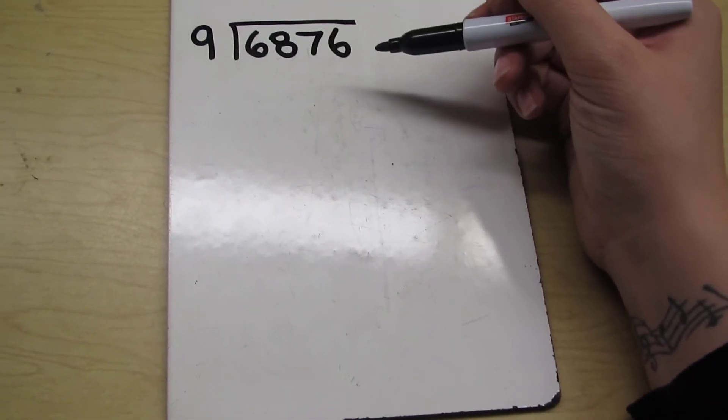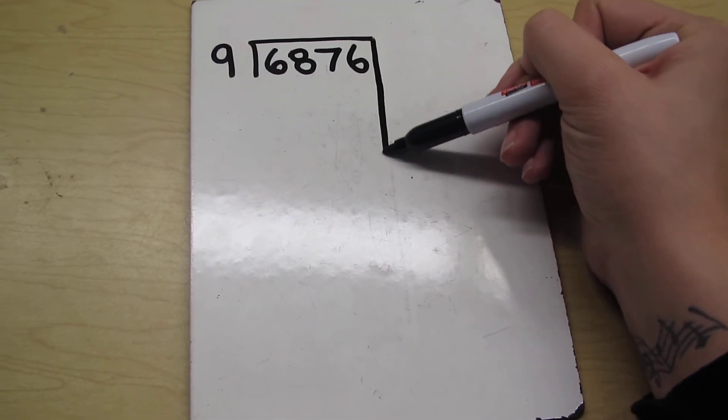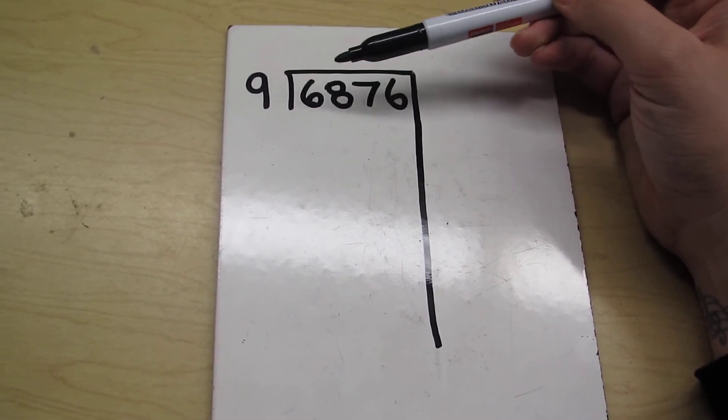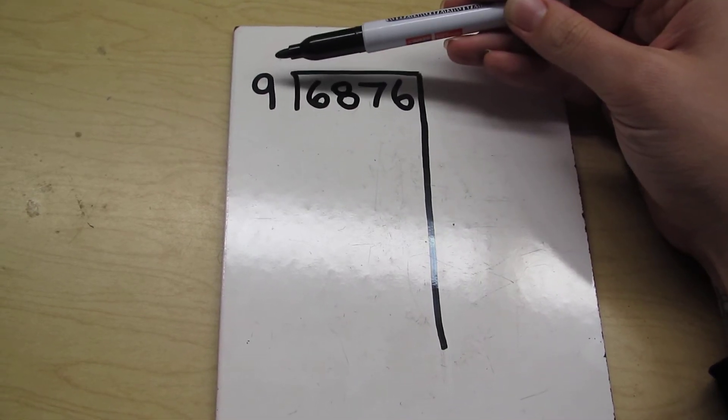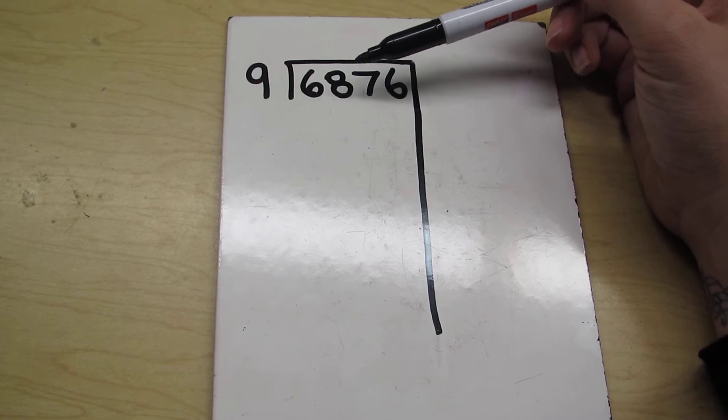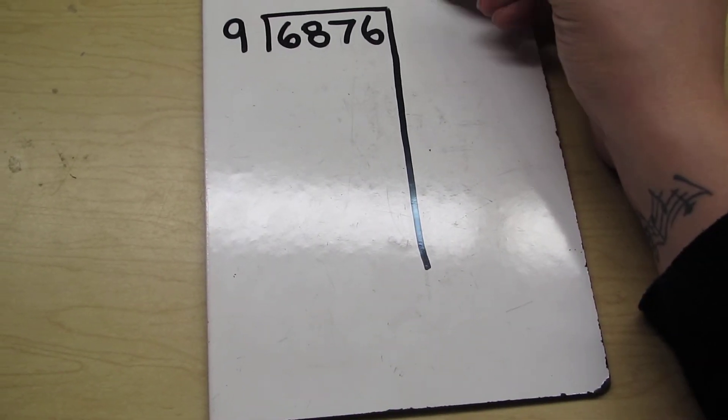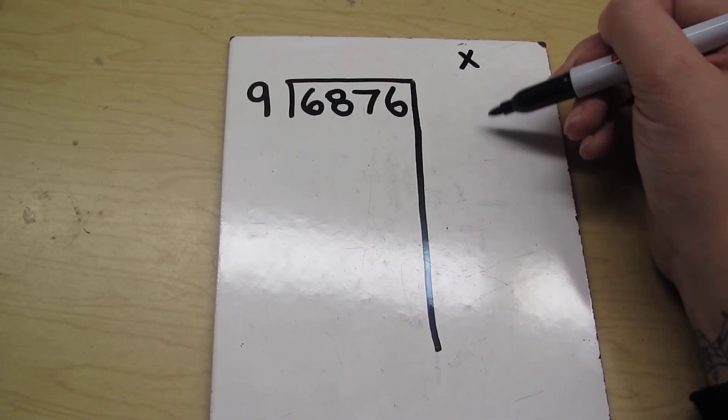So the first step is we're going to make a line. We're going to see what we're dividing here. We're doing 6,876 divided by 9. Be careful not to read it the other way around. It's this number that we're working with first. We put a line here because we know that in this area is where we're going to do all our multiplication.